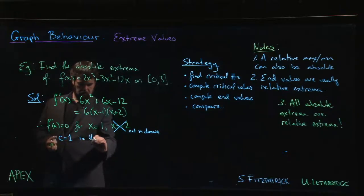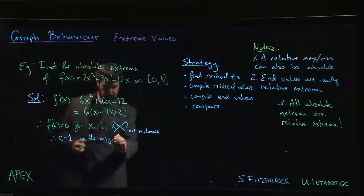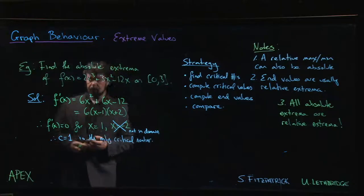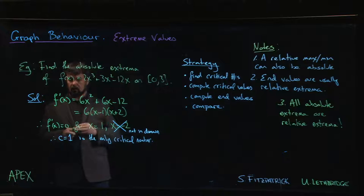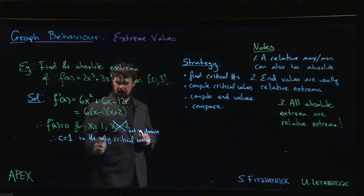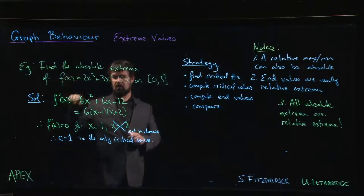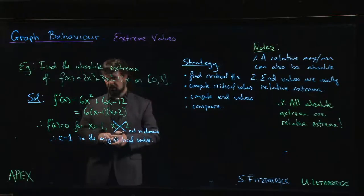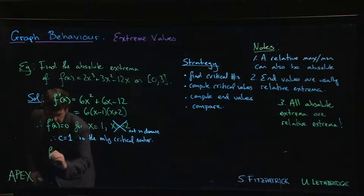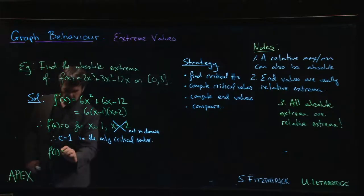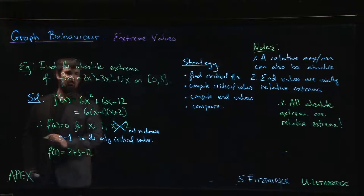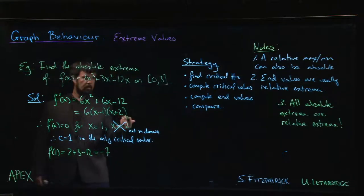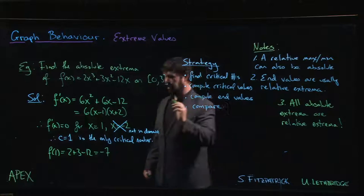We've got a critical number. What's next? Find the corresponding critical value. Be careful: the critical value is the value of the original function, not the derivative. We know what happens when we plug 1 into the derivative—we get 0, because it was a critical number. What we need now is f(1). So f(1) = 2 + 3 - 12 = -7. There's our critical value.